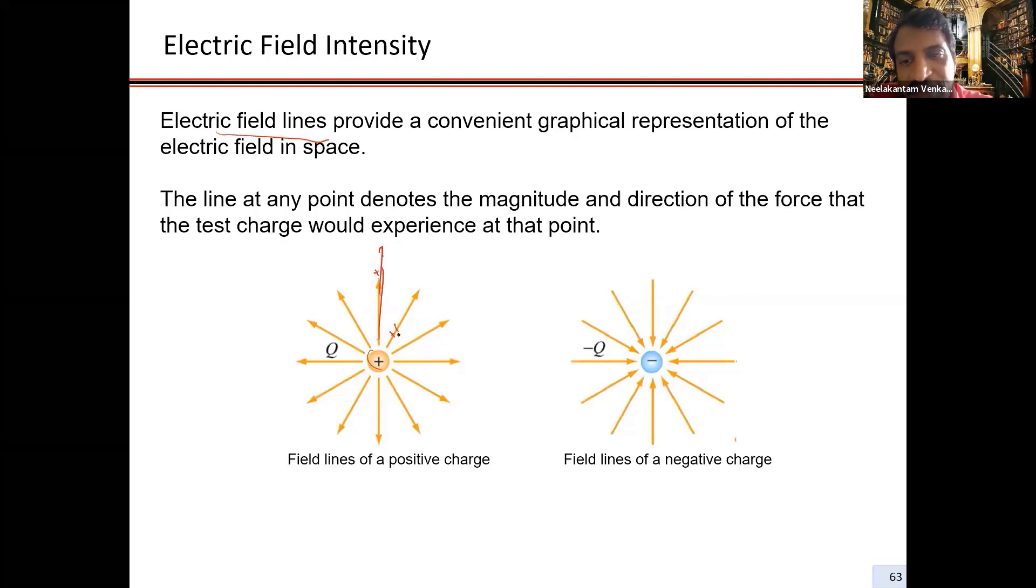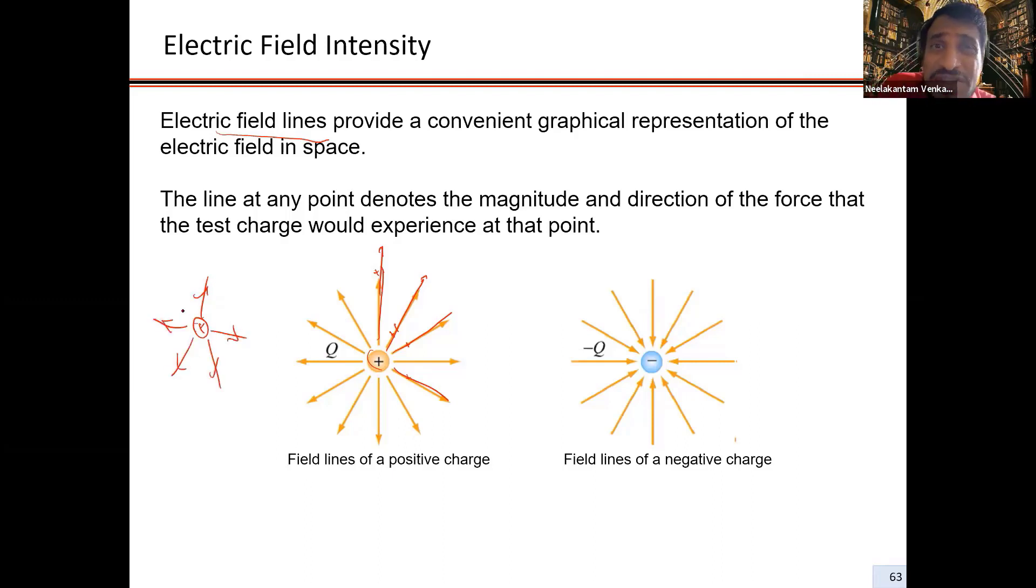If I bring in a plus one here, it's going to move away. Same at any point around the charge. So it's like the sun radiating out. Field lines of a positive charge look like this - moving away radially. You can see that this vector field has positive divergence.